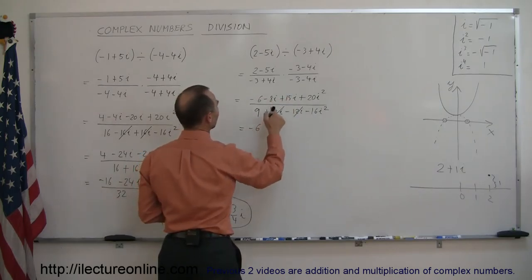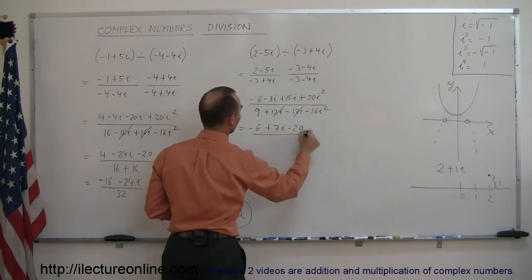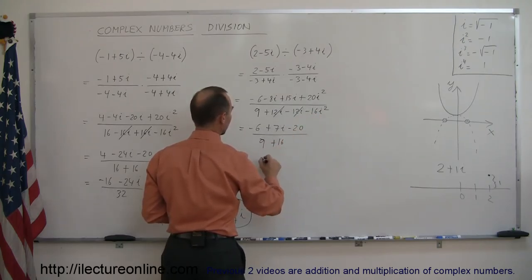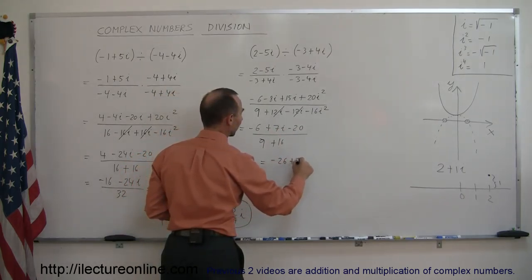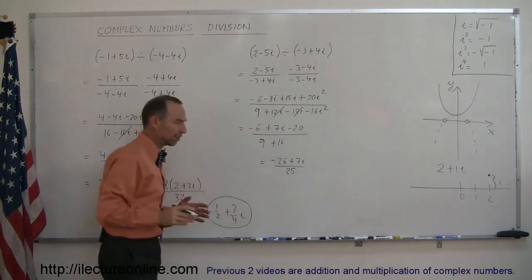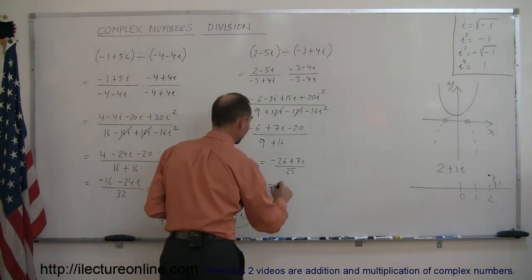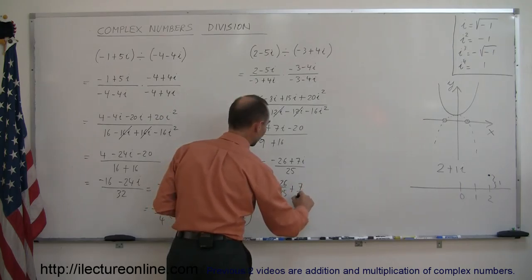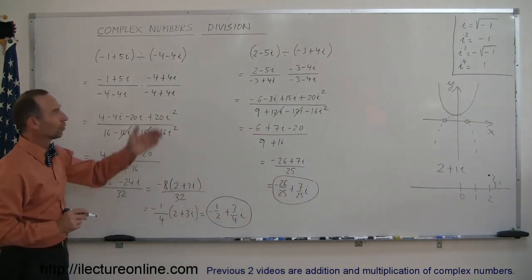Combining terms in the numerator: minus 6, plus 7i, and since i squared is negative 1, this is minus 20. In the denominator: i squared is negative 1, so negative 1 times minus 16 is plus 16, giving us 9 plus 16 equals 25. Combining the real parts: minus 6 plus negative 20 is minus 26 plus 7i, divided by 25. We can't factor anything out, so the final answer is minus 26 over 25 plus 7 over 25 i.